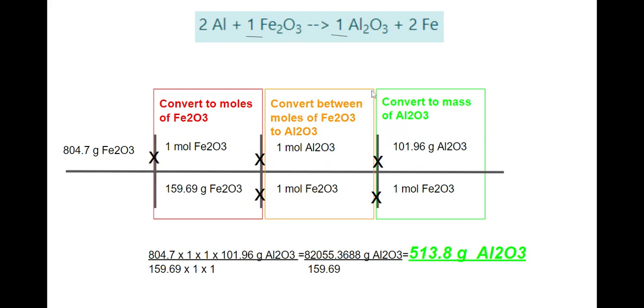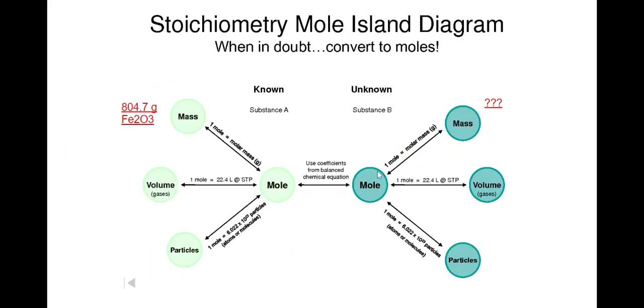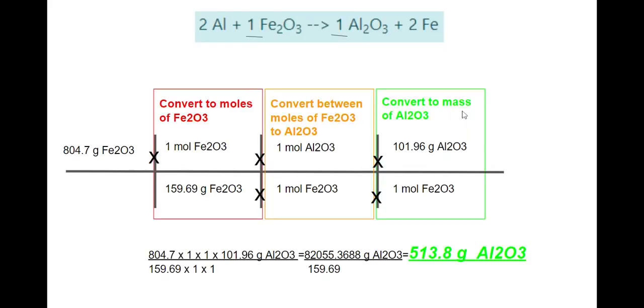If it had asked to figure out the mass of iron produced, then you would have two moles of iron here instead of the one mole Al2O3, but you're lucky and you just have the one here. For the diagram, we're in moles. Now we want to go to mass. So we need to convert into mass.